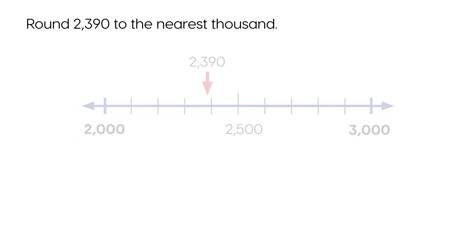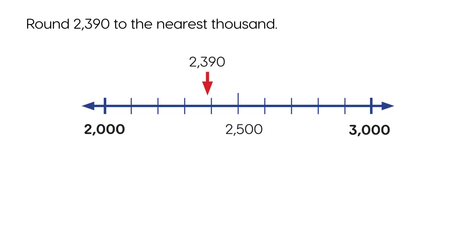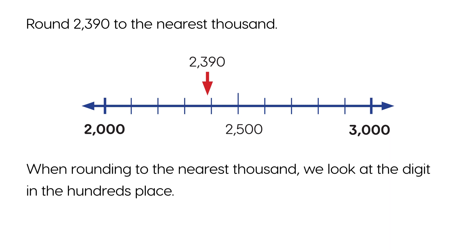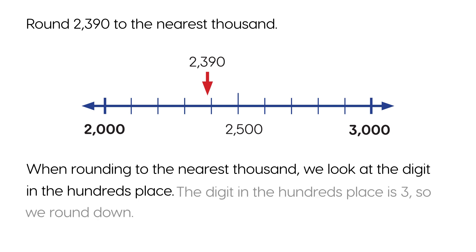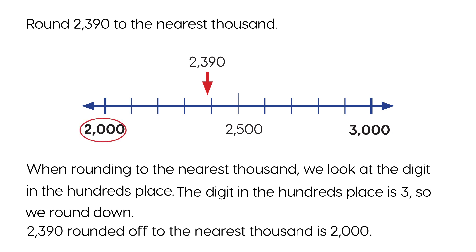Round 2,390 to the nearest thousand. When rounding to the nearest thousand, we look at the digit in the hundreds place. The digit in the hundreds place is 3, so we round down. 2,390 rounded off to the nearest thousand is 2,000.